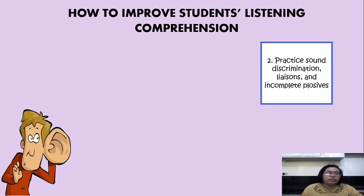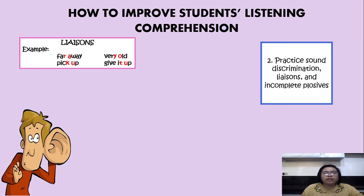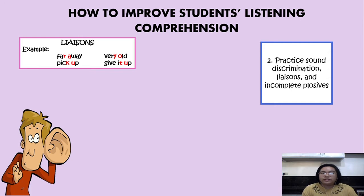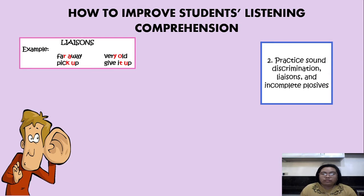Here are some examples of liaison. Liaison is the linking of sounds and words. So instead of pronouncing phrases as separate words — 'far away,' 'pick up,' 'very old,' 'give it up' — they should be pronounced as connected to each other: 'far away,' 'pick up,' 'very old,' 'give it up.' That is how they should be pronounced.